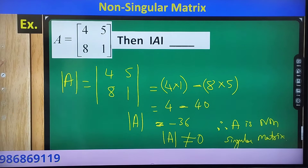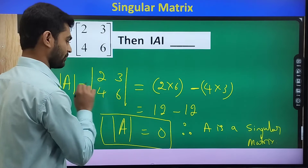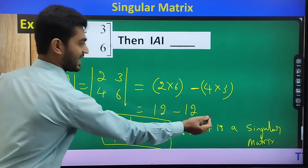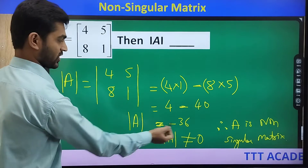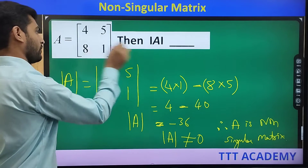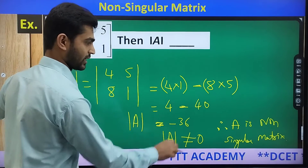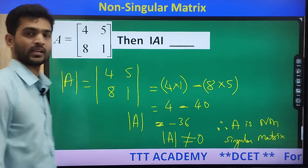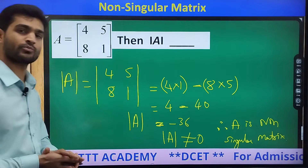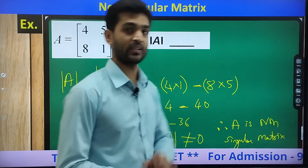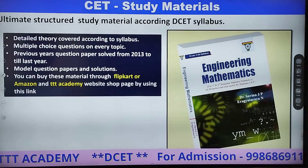Once again I am revising the content. Singular matrix is nothing but if the determinant equals 0, then A is singular. If it is not equal to 0 — as we just saw, we got minus 36 — the reason determinant of A is not equal to 0, so I can call it a non-singular matrix. That is a very important concept.